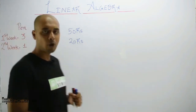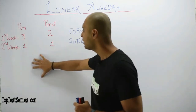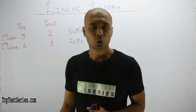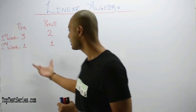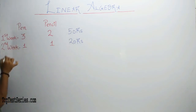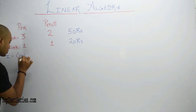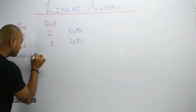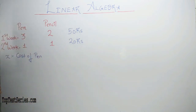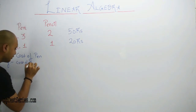Ab, real life problem hai yin — ki agar main poochu, ekdum simple sa, ki bhai, mujhe bata do ki pen aur pencil ka cost kya hoga? Toh aap toh haste haste bata dhenge, aram sir — ki sir, ye toh bahut hi easy hai. Suppose, cost of pen kya hoga — let it be x, thik hai? Cost of pen = x. Aur cost of pencil, aap bolenge, y. Cost of pencil = y.